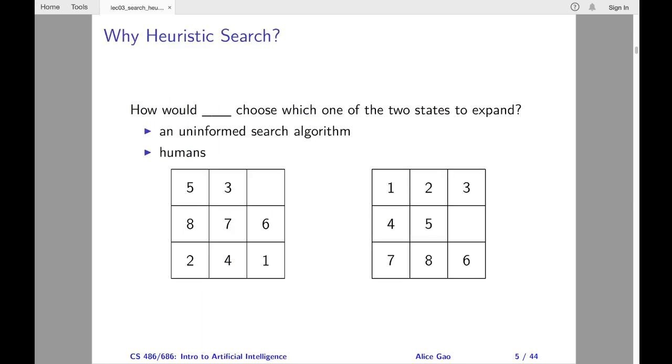So far, I've discussed several uninformed search algorithms: depth-first search, breadth-first search, and iterative-deepening search. Is there anything unsatisfying about these algorithms?